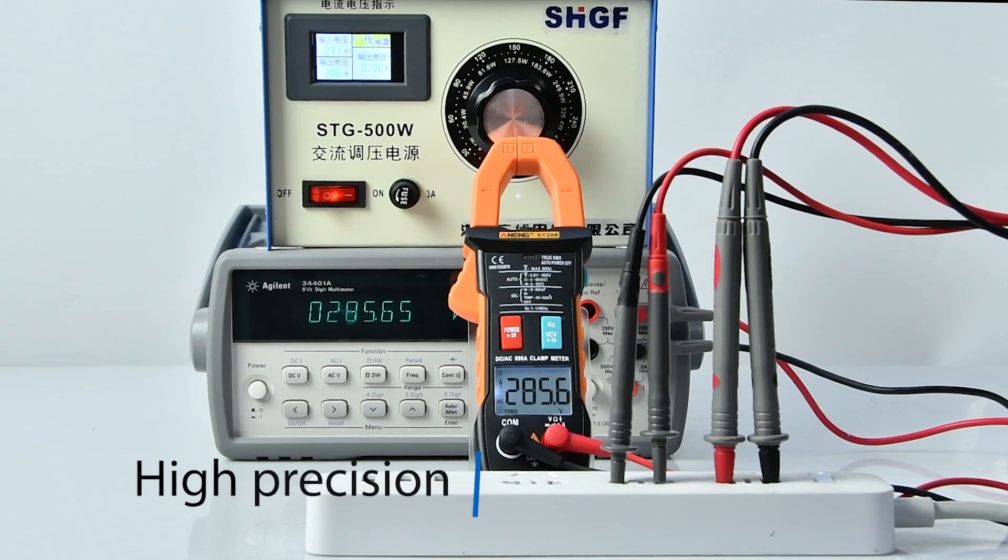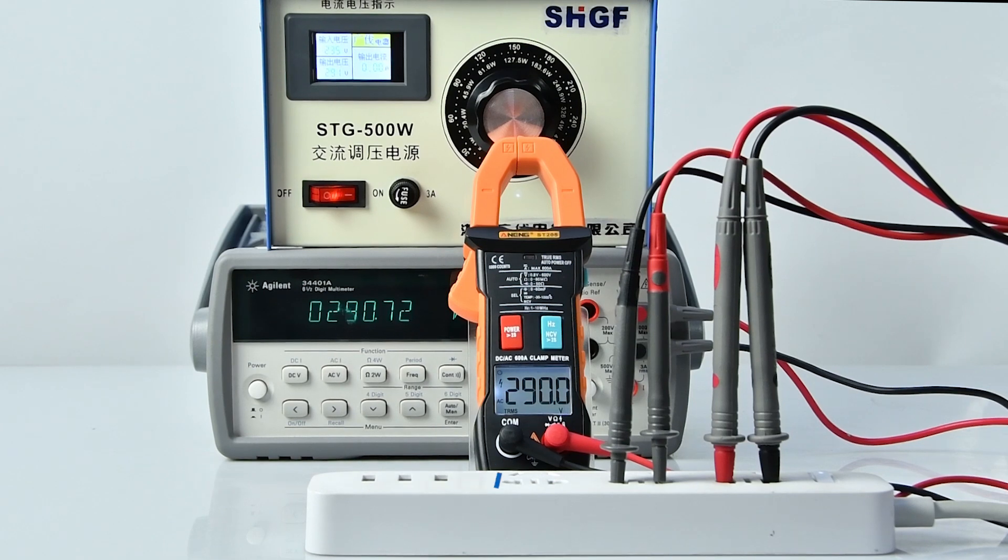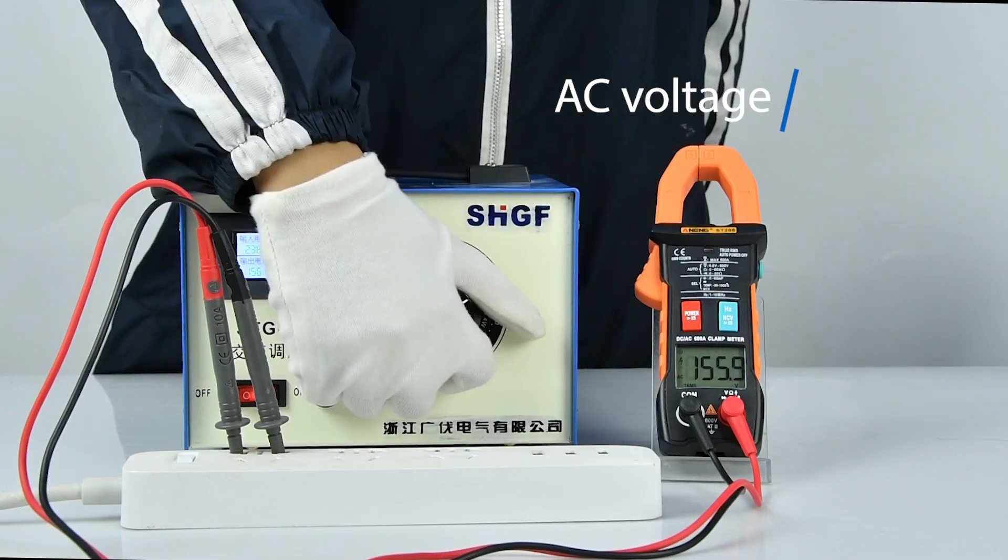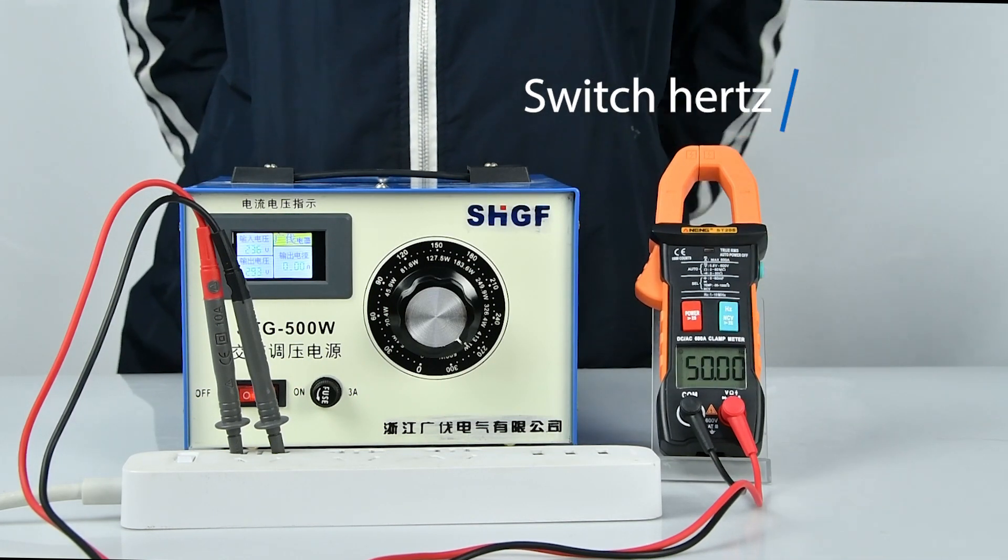Precision comparison: compared with the multimeter, the value is very accurate. AC voltage measurement, measured with voltage regulator, can switch hertz during measurement.